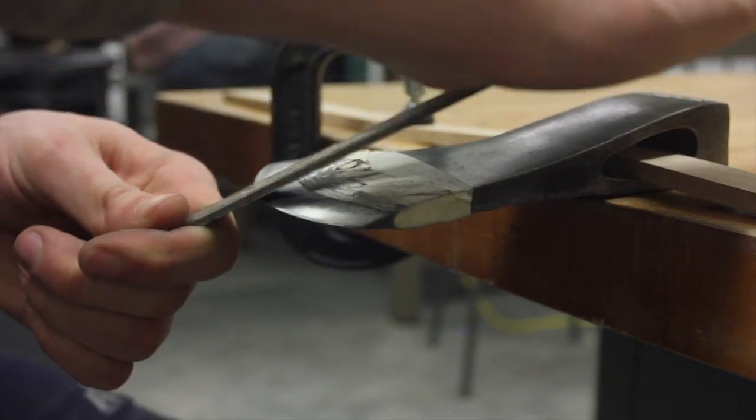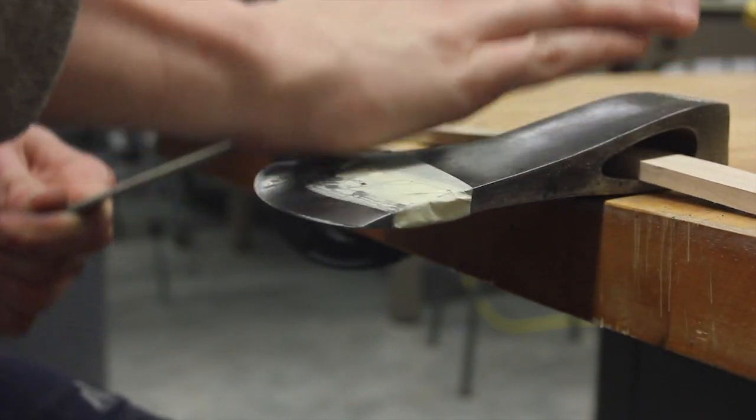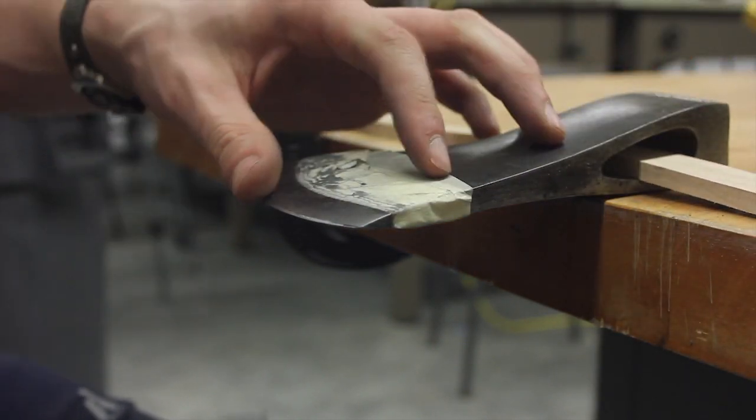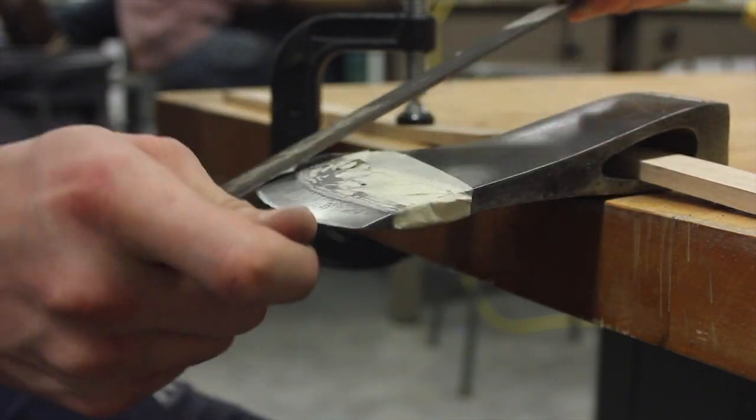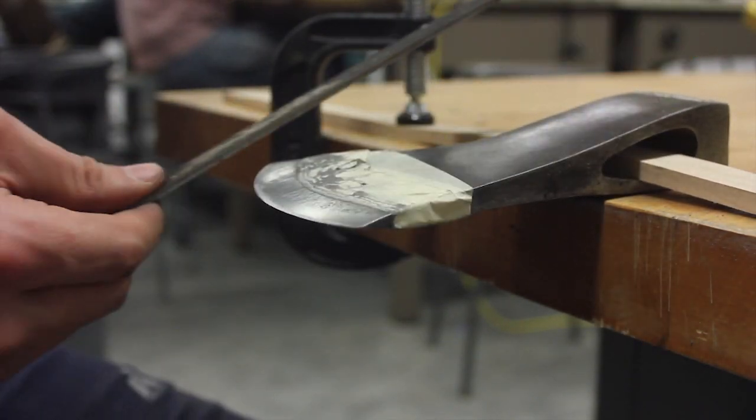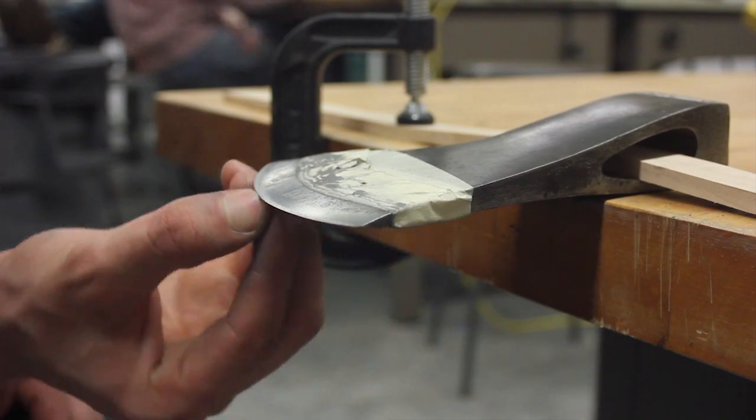Now it comes to actually putting an edge onto the axe head and I'm using a file here. There's a bunch of different ways you can do all the processes that I'm showing you here. I'm using a file because I really want to take my time and do it right.